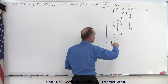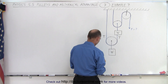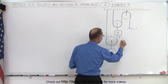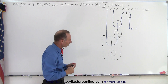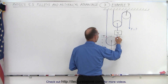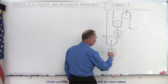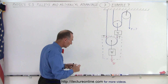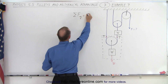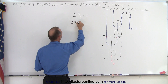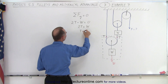The first thing we're going to do is look at this string here. Since there's no mass and no friction, the tension on the left side must equal the tension on the right side. Drawing a free body diagram around this part of the contraption, we see two forces pulling up and one force pulling down — the weight of the object. Using the equation that the sum of forces in the y-direction equals zero: 2T minus W equals zero, so T equals W divided by 2.